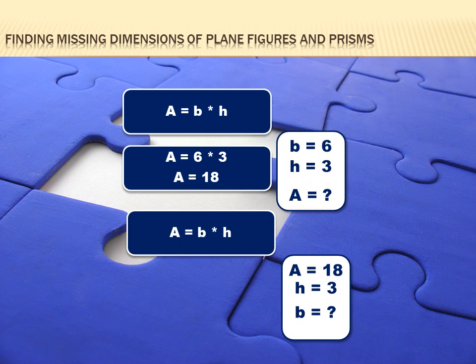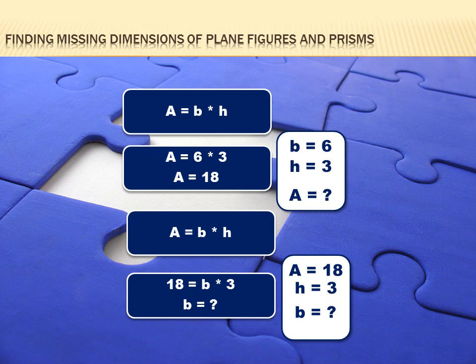Well, the first step would be just like the first step up here. You'd substitute what you knew for the variables. Up here, we put in a six and a three, because we knew the base and the height. Down here, we know the area and the height. So we'd substitute 18 for the area, and we'd substitute three for the height. And then we'd still have to figure out what B meant. Could you do that?